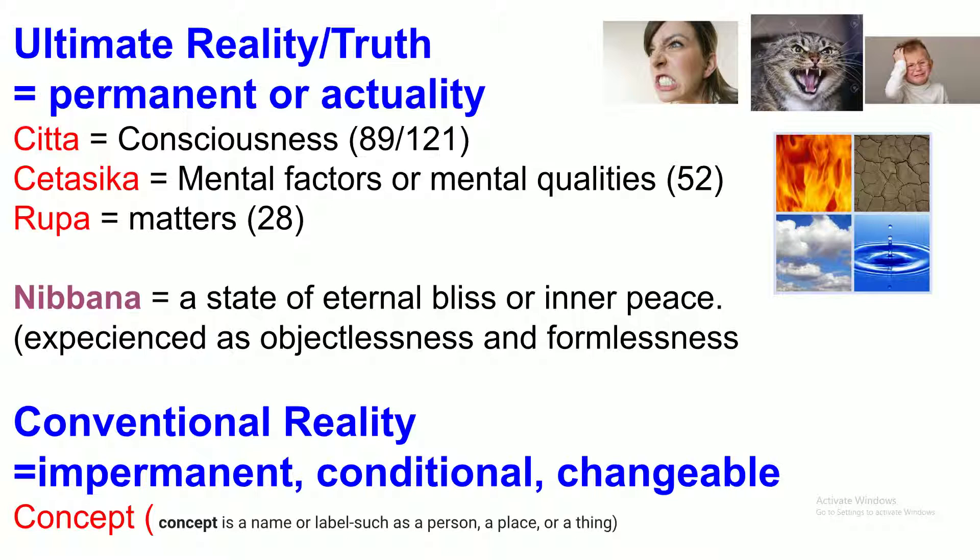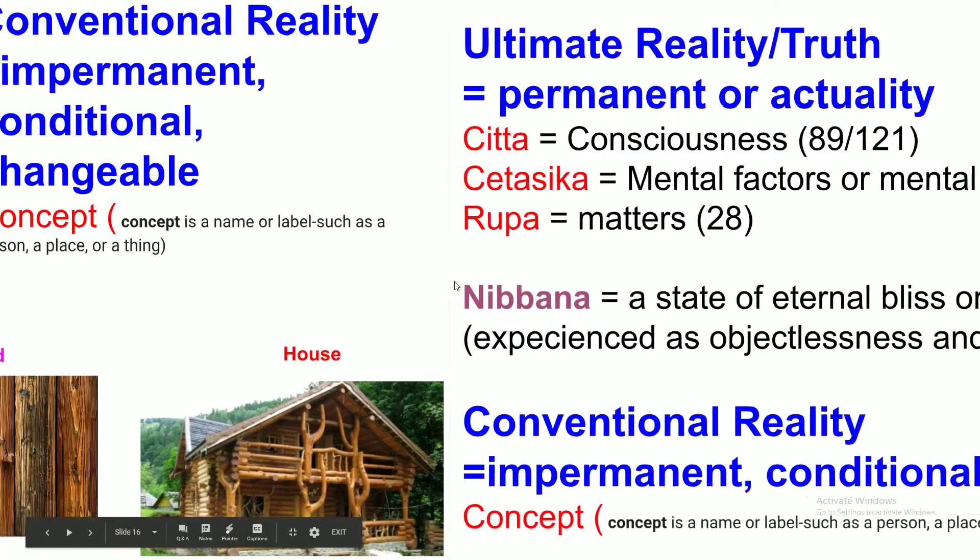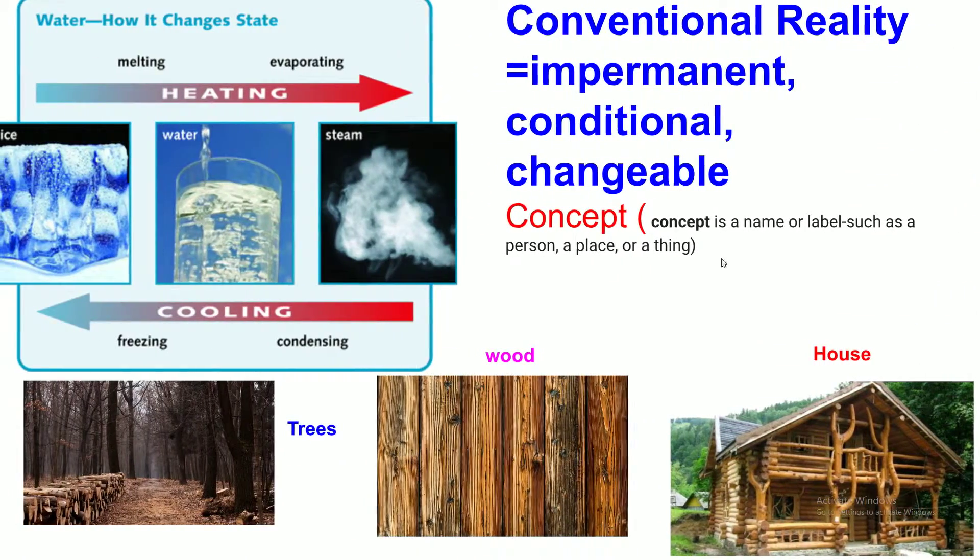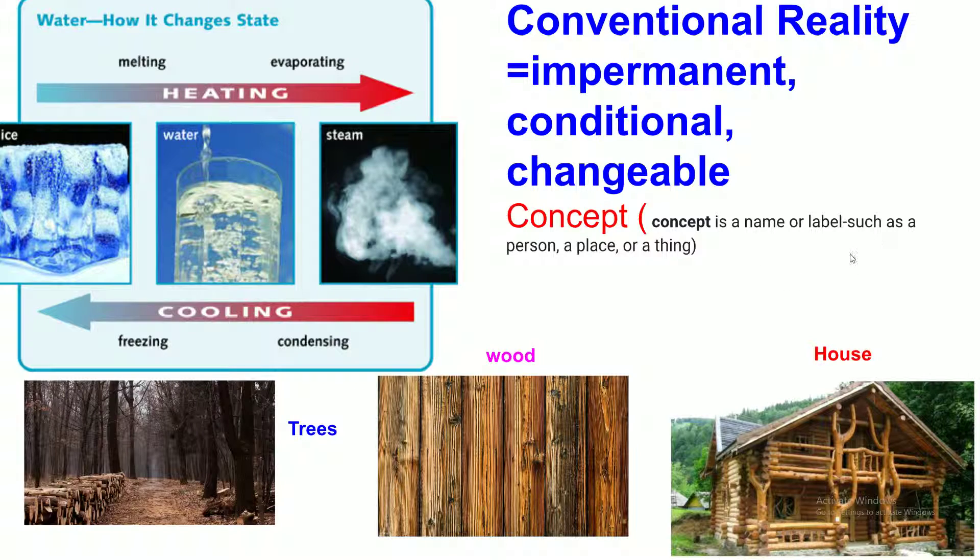The second type of reality is conventional reality. We call in Pali, Pannatti. It is impermanent, conditional. It changes when the form changes. The concept is classified under it. Concept is a name or label, such as a person, men, women, kings, queens. A place like United States of America, United Kingdom, Myanmar, Thailand. It's changed. Things like car, clothes, house.